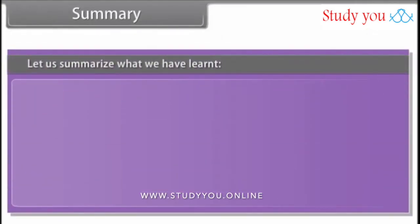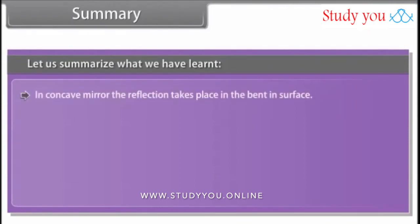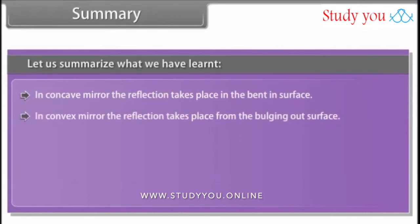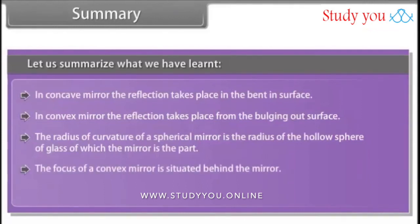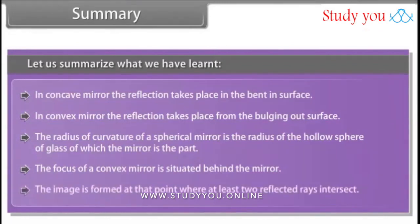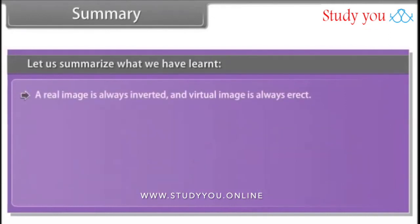Summary: In a concave mirror, reflection takes place at the bent-in surface. In a convex mirror, reflection takes place at the bulging-out surface. The radius of curvature of a spherical mirror is the radius of the hollow sphere of glass of which the mirror is a part. The focus of a convex mirror is situated behind the mirror. The image is formed at the point where at least two reflected rays intersect. A real image is always inverted and a virtual image is always erect.